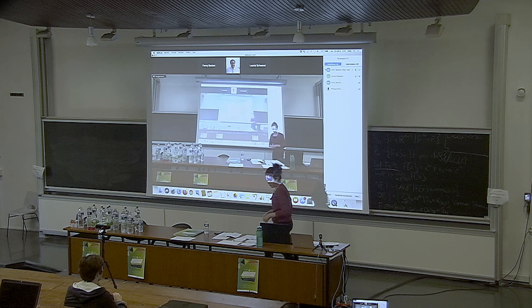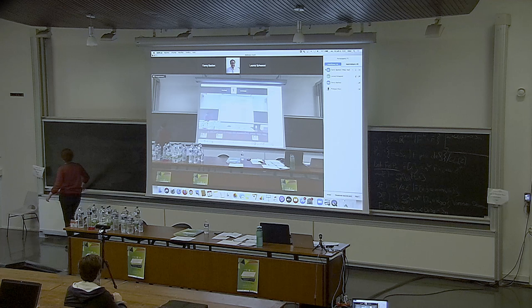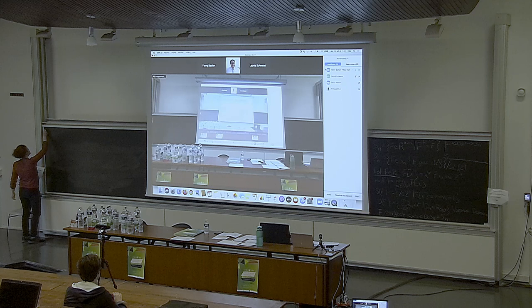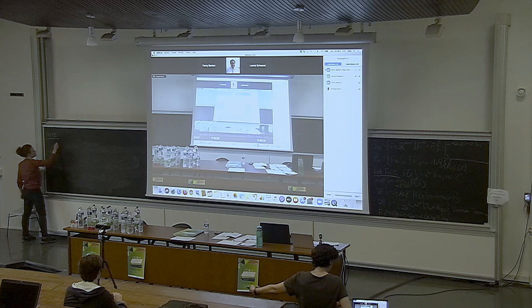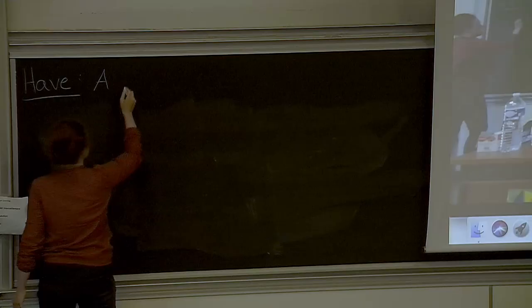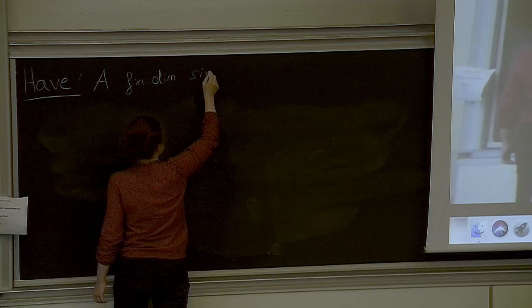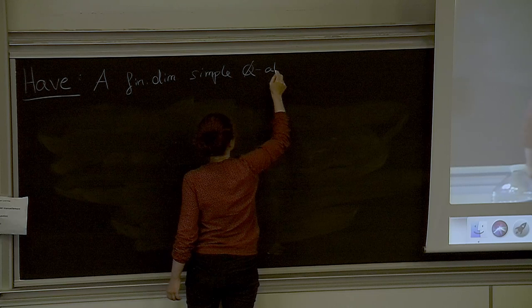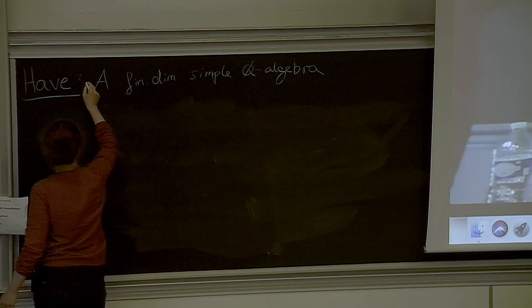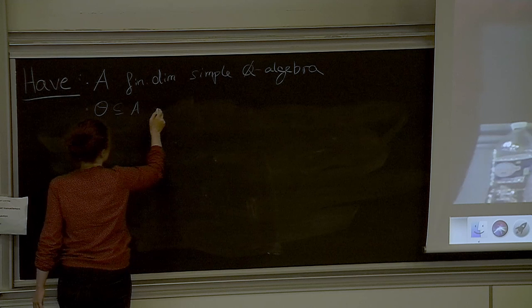First of all, let's note down what we have and what our goal is. So what we have, as I said, is, let's call it A, a finite dimensional simple Q algebra. And what we also have is O, which is an order in A.